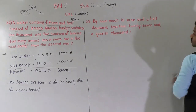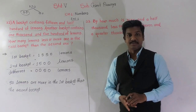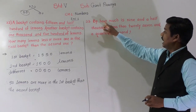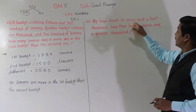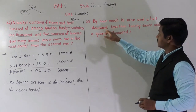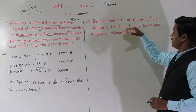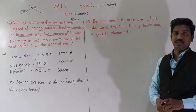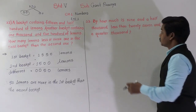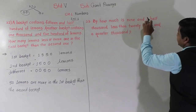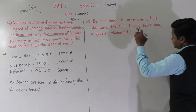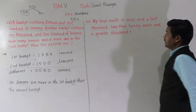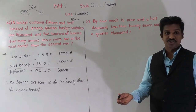Then we will move towards the next question, that is question number 23. The question is: by how much is 9 and a half thousand less than 27 and a quarter thousand? So there are two numbers — 9 and a half thousand. 9 and a half thousand means how much?